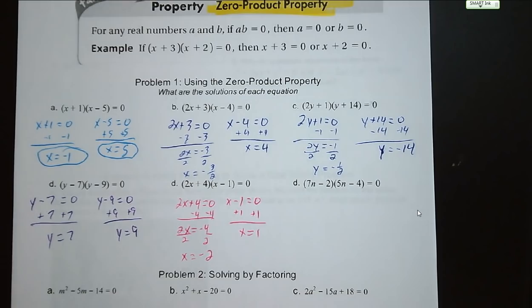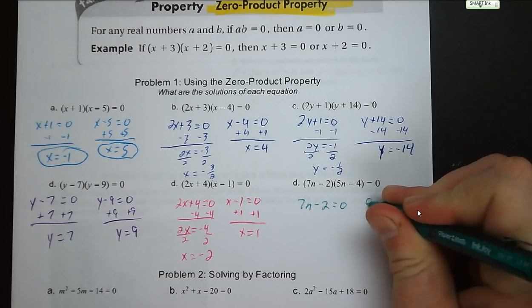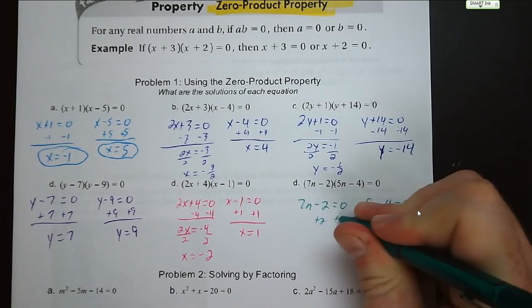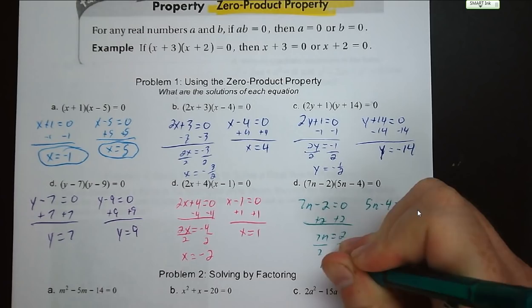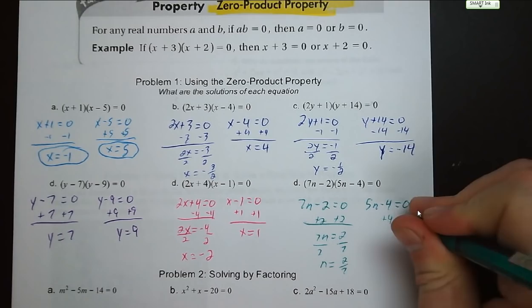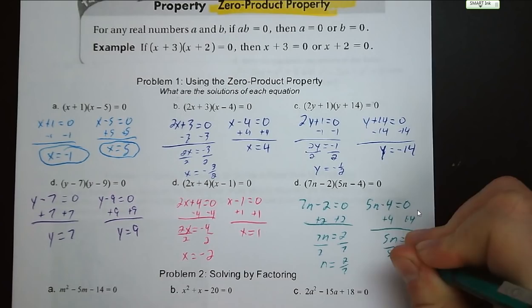Next: 7n minus 2 equals 0 and 5n minus 4 equals 0. Add 2, then divide by 7: n equals 2 over 7 — leave it as a fraction. Add 4, then divide by 5: n equals 4 fifths.